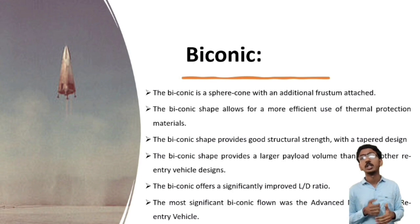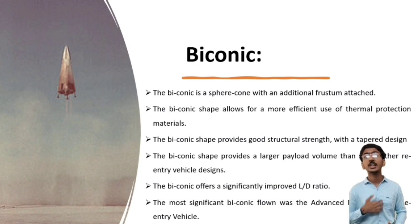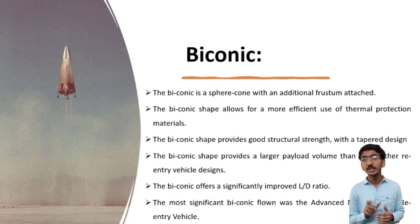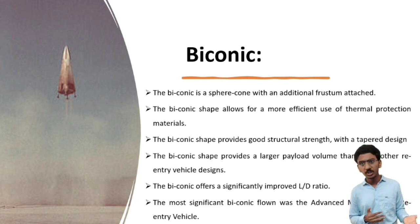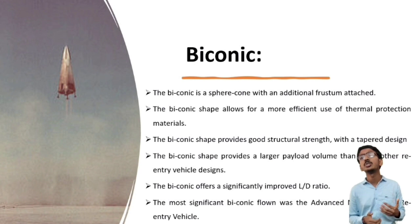Next is the Biconic shape. The Biconic is a sphere-cone with an additional frustum attached. The Biconic shape allows for more efficient use of thermal protection materials and provides good structural strength with a tapered design. It provides a larger payload volume than some other reentry vehicle designs and offers a significantly improved lift-to-drag ratio. The most significant Biconic form was the advanced maneuverable reentry vehicle. Overall, the Biconic shape is a versatile design providing a balance of aerodynamic efficiency, thermal protection, stability and control, structural strength, and payload volume. This image shows the DC-X shown during its first flight — a prototype single-stage-to-orbit vehicle that used a Biconic shape.